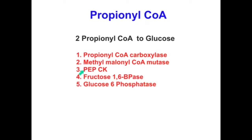Oxaloacetate moves to the cytoplasm in the form of malate, is converted back to oxaloacetate, and then phosphoenolpyruvate carboxykinase (PEPCK) converts it to phosphoenolpyruvate. From there, fructose-1,6-bisphosphatase and glucose-6-phosphatase complete the pathway. Overall, propionyl-CoA needs five important enzymes to make glucose: propionyl-CoA carboxylase, methylmalonyl-CoA mutase, PEPCK, fructose-1,6-bisphosphatase, and glucose-6-phosphatase.